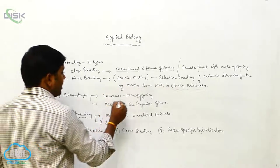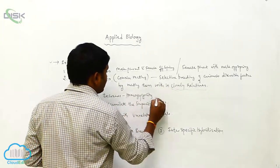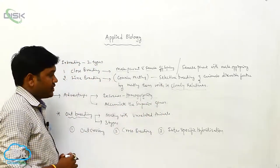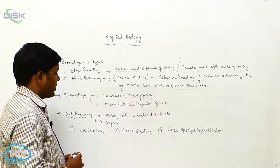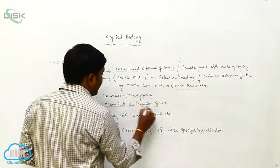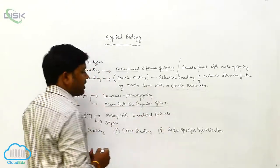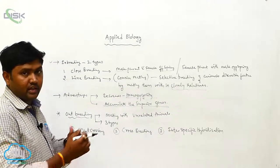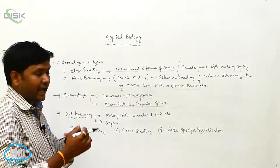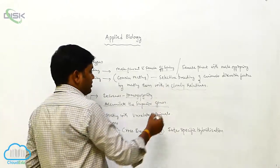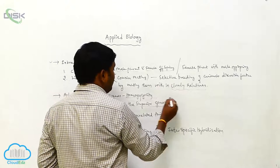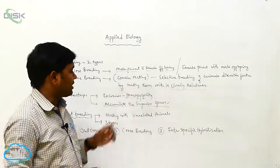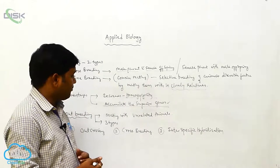The advantages of inbreeding include increasing homozygosity and accumulating superior genes. Homozygosity means the individuals have the same characteristics — 'homo' meaning same. So inbreeding helps grasp and fix superior genes through increased homozygosity.